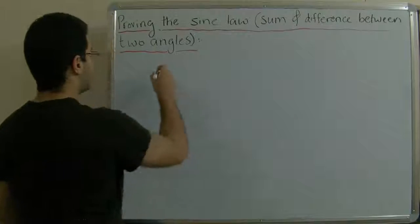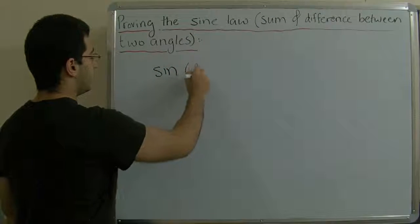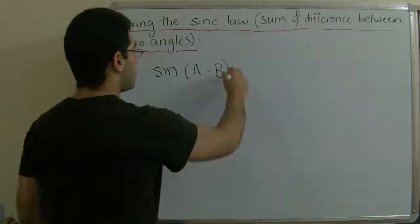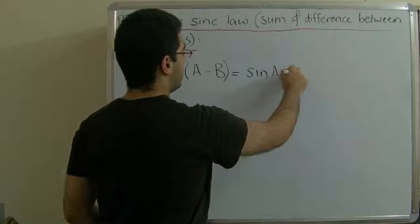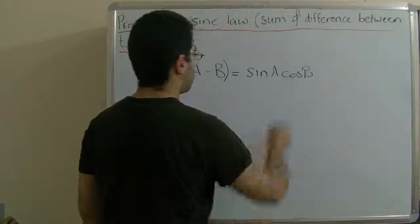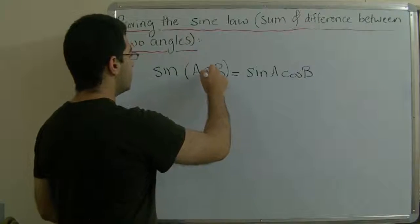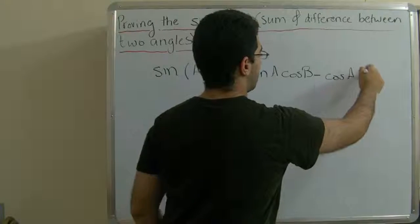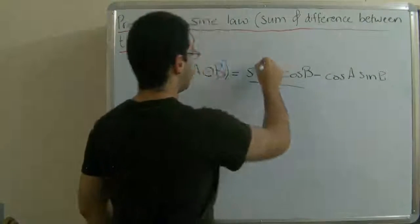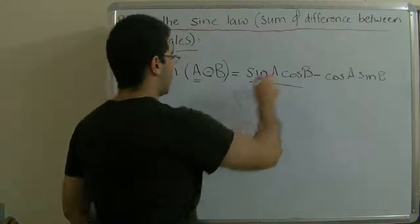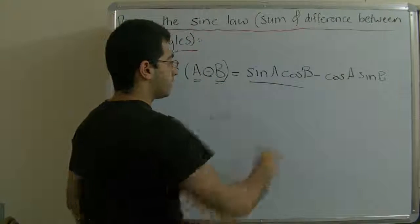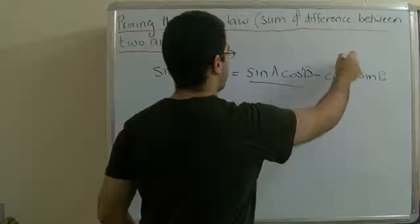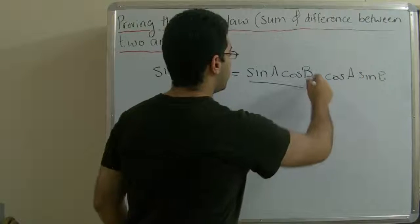Our rule says that sine of the difference between two angles, let's say a and b, equals sine a cosine b, and the sign doesn't change, negative cosine a sine b. So in the first term we have sine of the first angle, cosine of the second angle. In the second term we have cosine of the first angle and sine of the first angle — they are the opposite of each other. And the sign doesn't change.